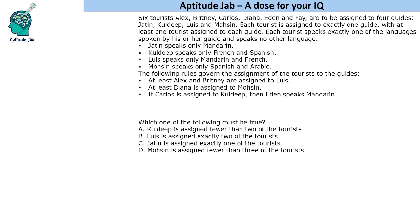Each tourist is assigned to exactly one guide, with at least one tourist assigned to each guide. So that means for every tourist there will be only one guide, and every guide will have at least one tourist. One guide can have multiple tourists because there are six tourists, but a tourist will have only one guide.